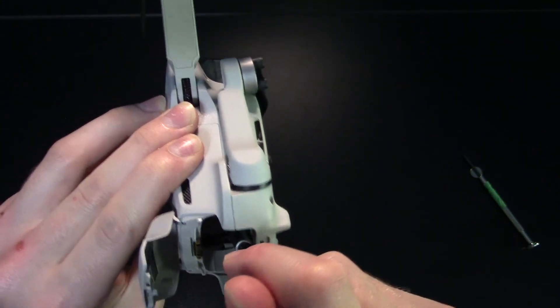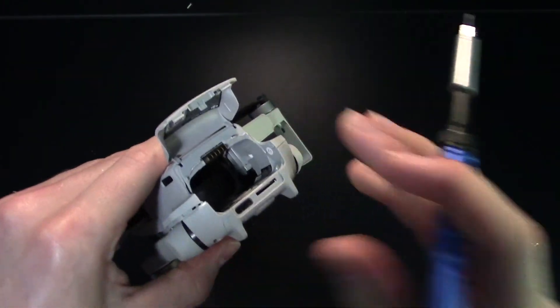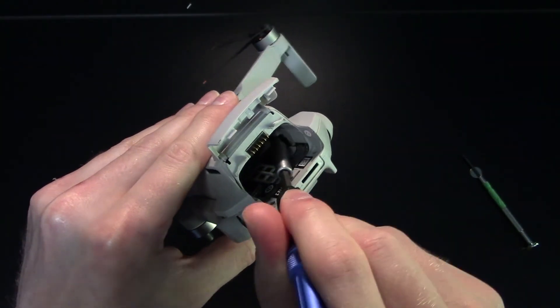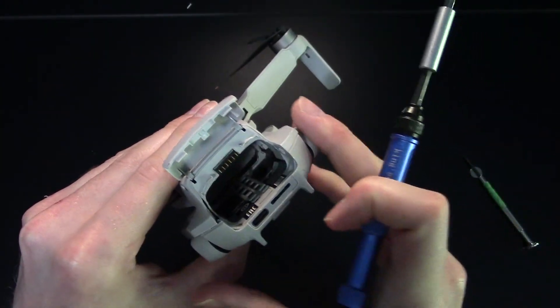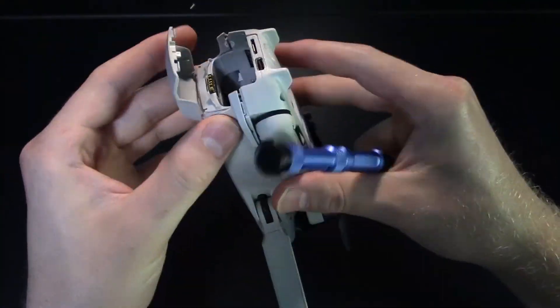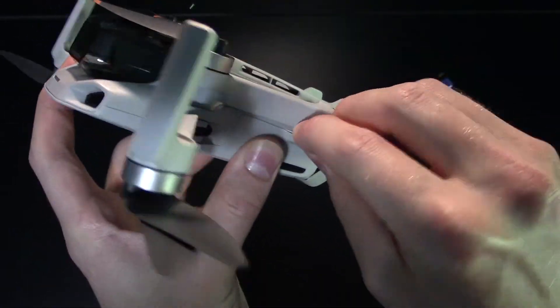Then there's two tabs on both the left and right side that hold the top on. You can use just a small slot screwdriver and pry them inward. It feels like you're going to break them, but they just kind of click inward.